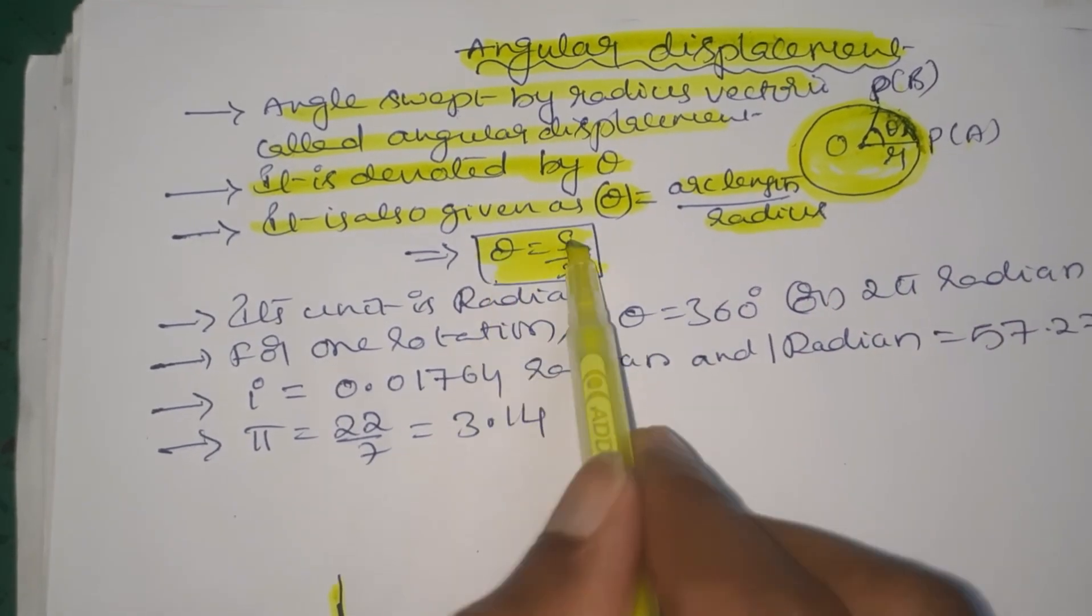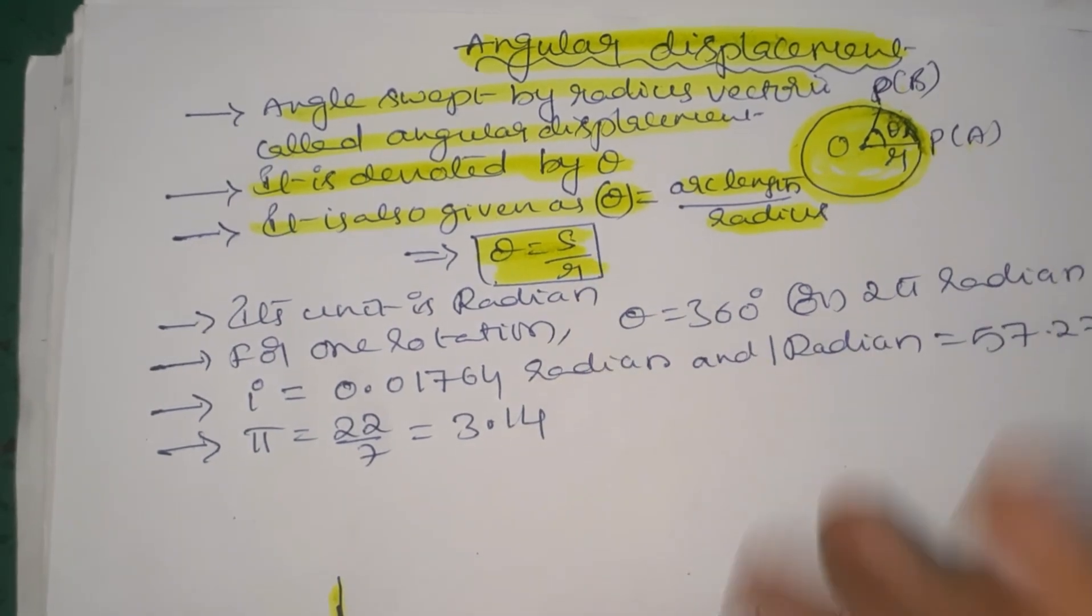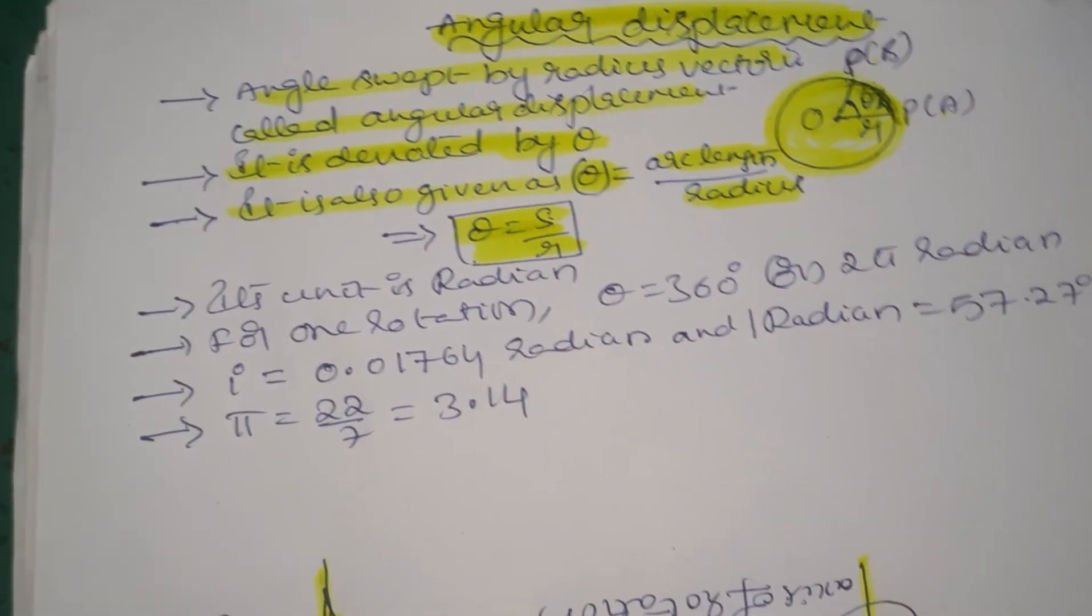So theta is given by s by r, where s is the arc length and r is the radius.